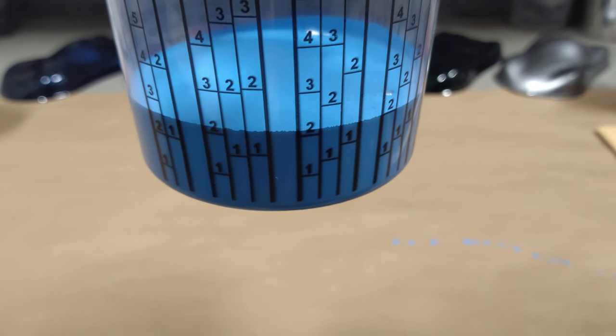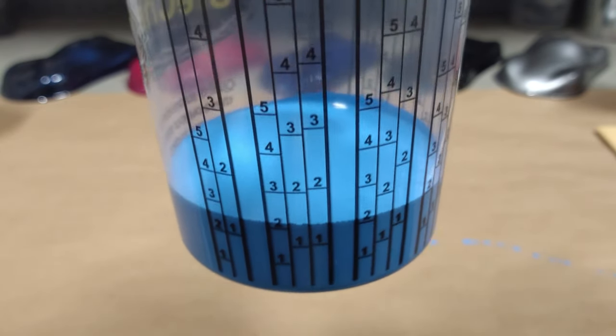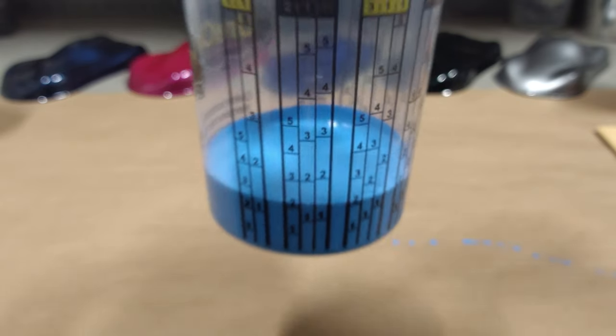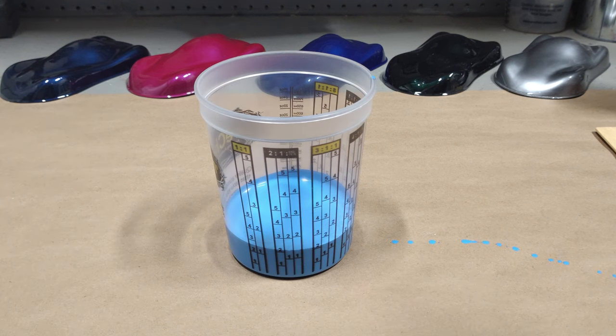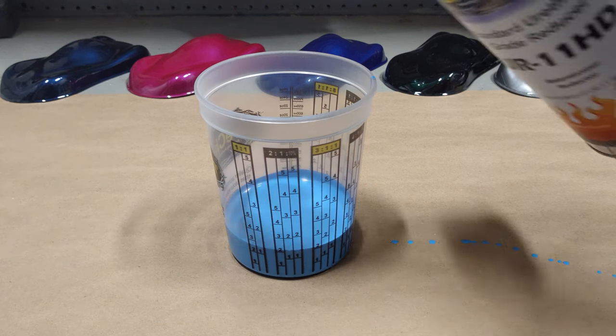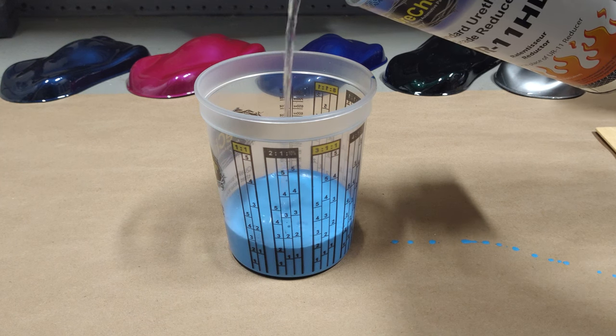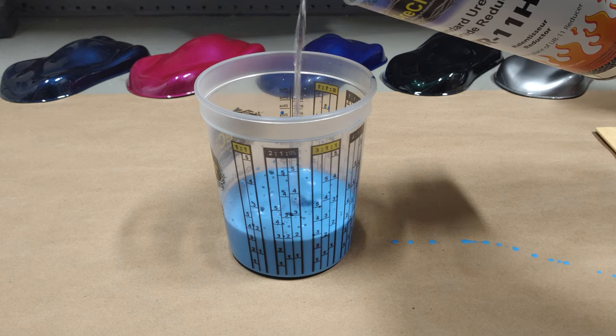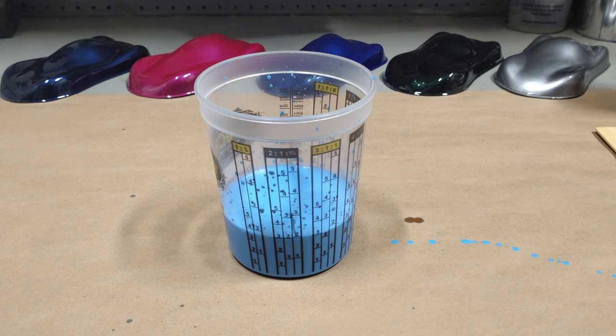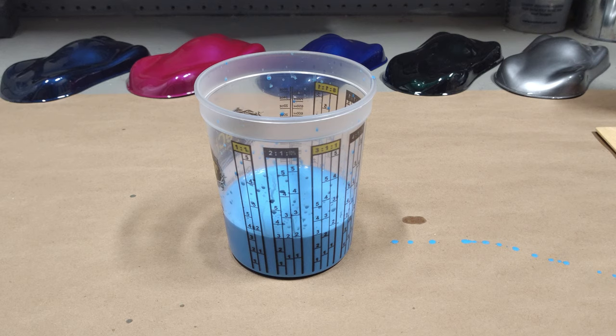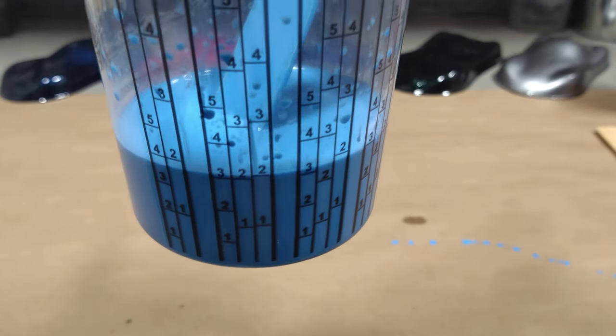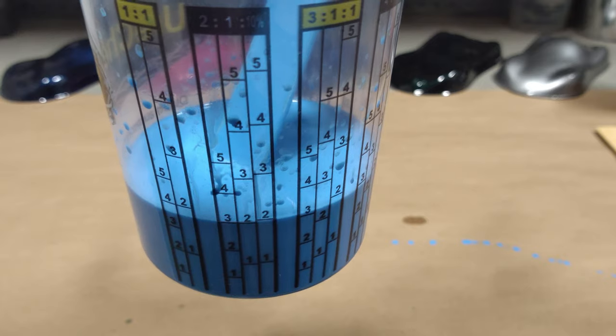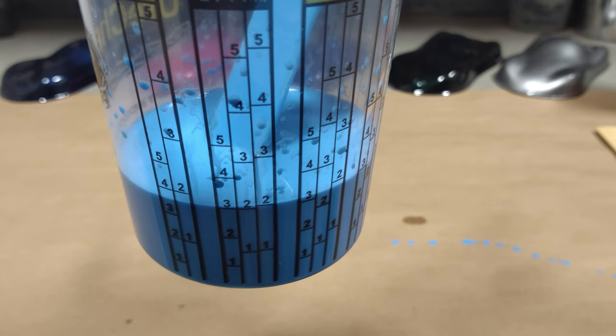You're going to bring it right up to the number two there in our first column, first row. Let's grab some reducer. And we're working left to right, just like we're reading a book. You can see that our material is now up to that second row in the column, two to one.